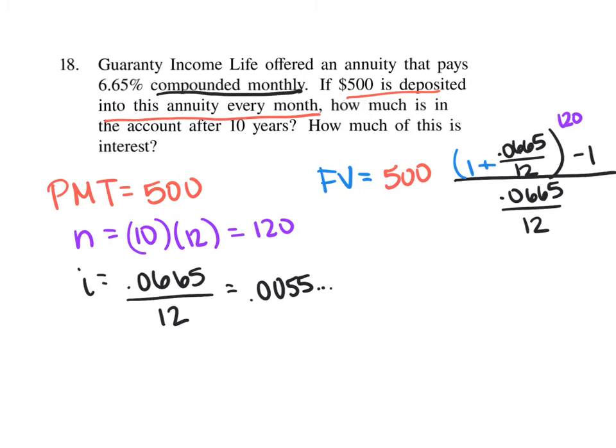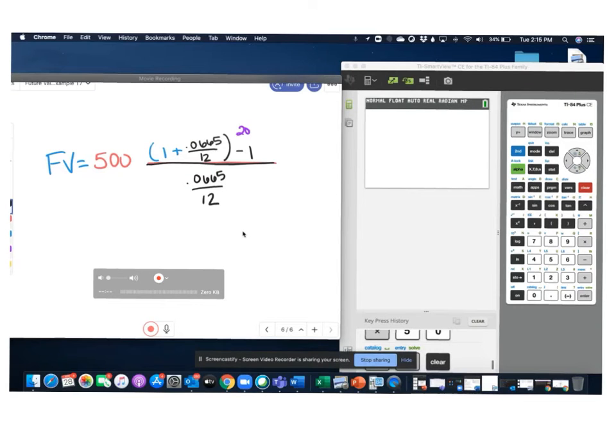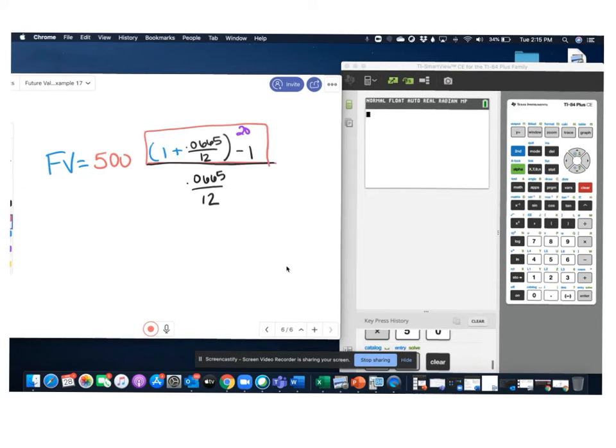And now we go to our calculator to finish calculating this. So in order to find the future value, we're going to do this top part first. In here, we're going to work the inside right here first. So we'll do 1 plus 0.0, and I'm going to put that inside part actually in parentheses to keep it clean, because it's not a nice decimal.